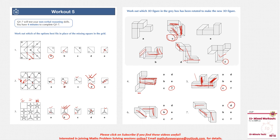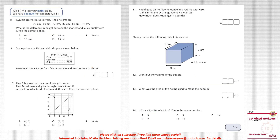The next question tests maths skills. Cynthia grows six sunflowers and their heights are given. What is the difference in height between the shortest and the tallest? The shortest is 74 cm and the tallest is 89 cm, so the difference is 15 cm. Question 8 answer is D.